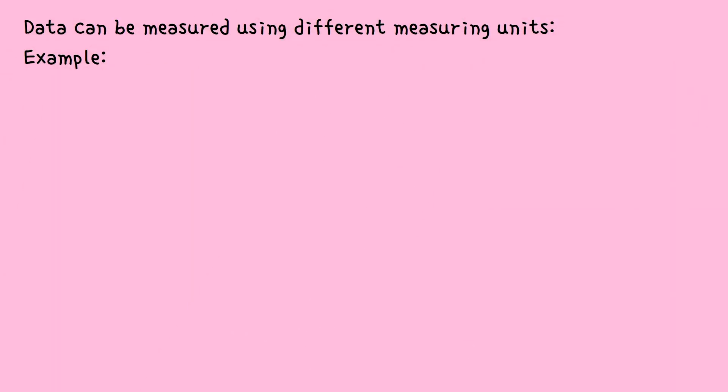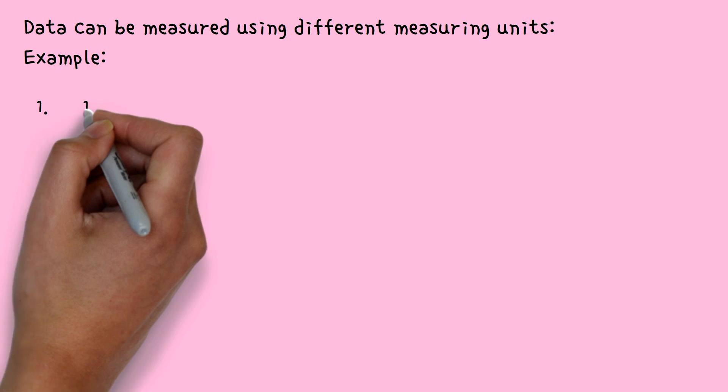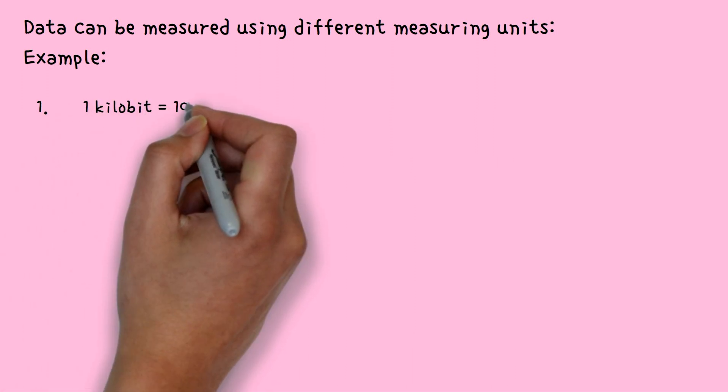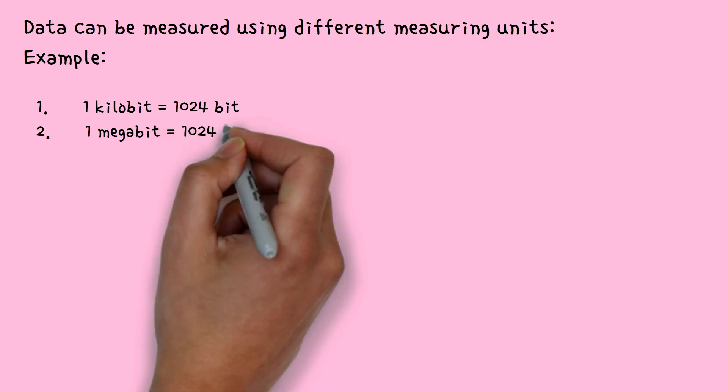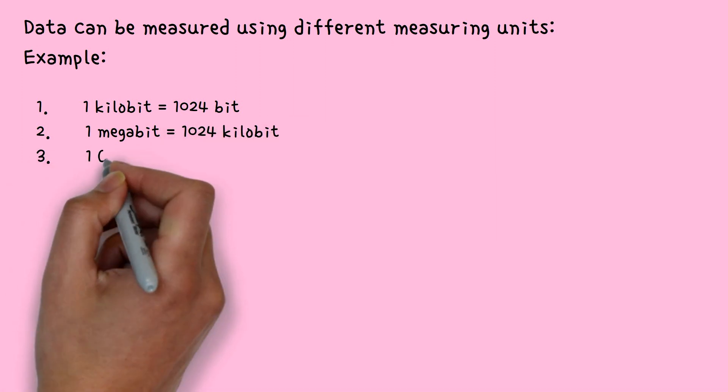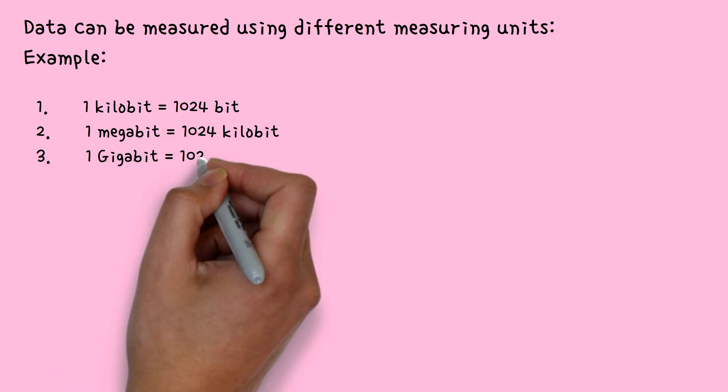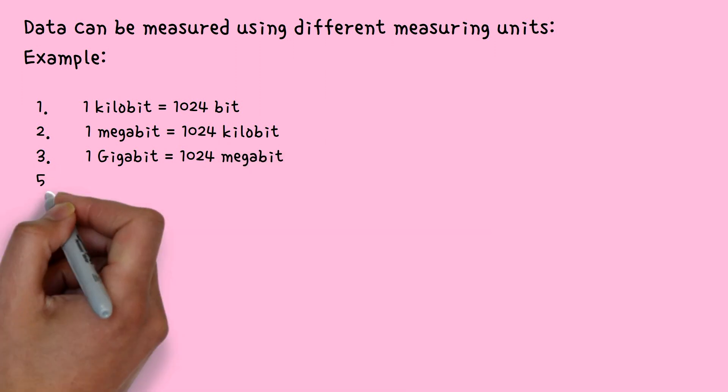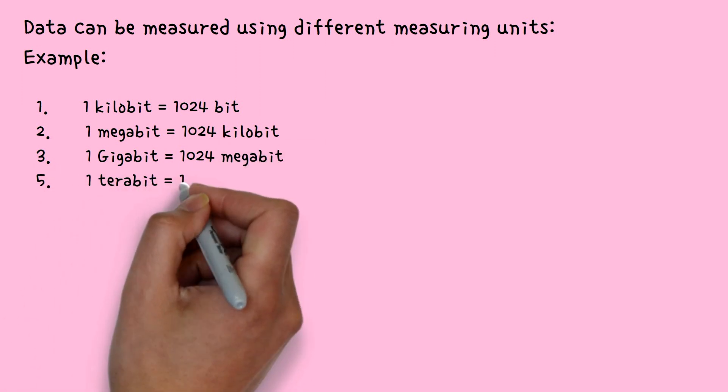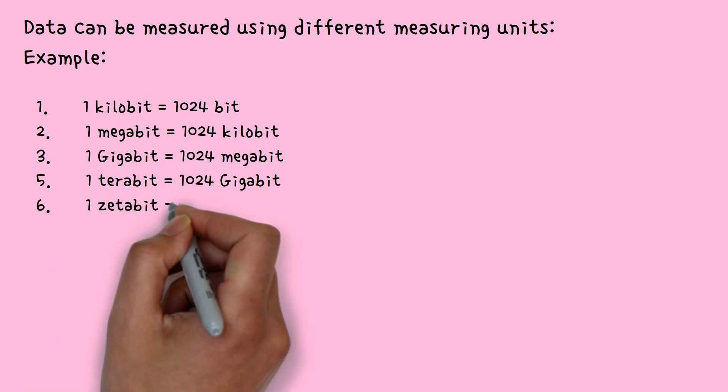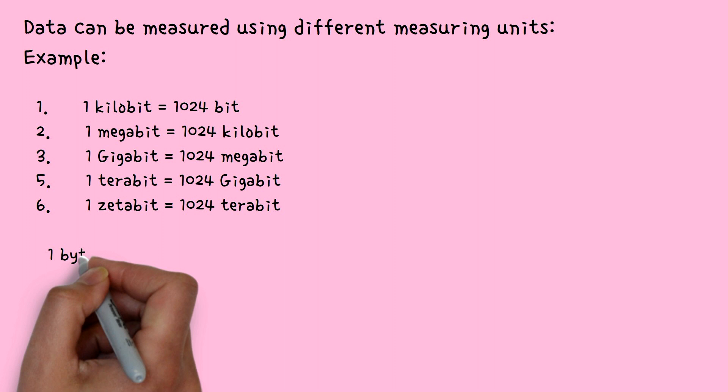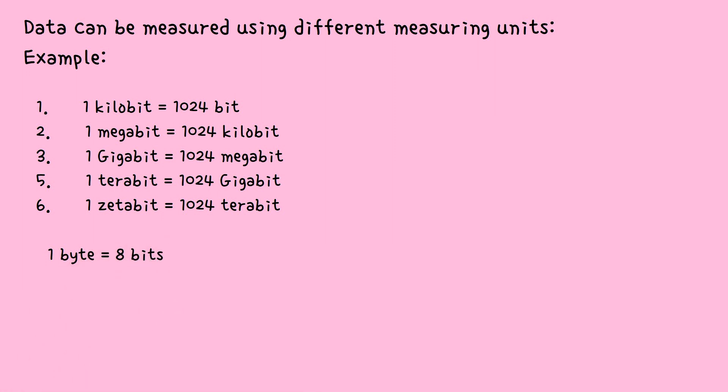Data can be measured using different measuring units. Examples are: one kilobit which is 1024 bit, one megabit which is 1024 kilobit, one gigabit which is 1024 megabit, one terabit which is 1024 gigabit, one zettabit which is 1024 terabit. And yeah, remember one byte is eight bits.